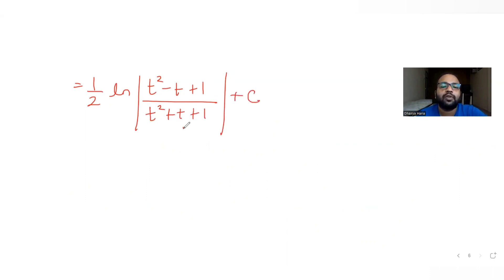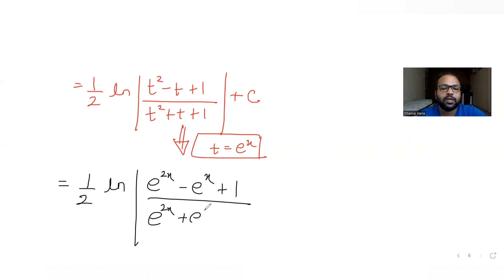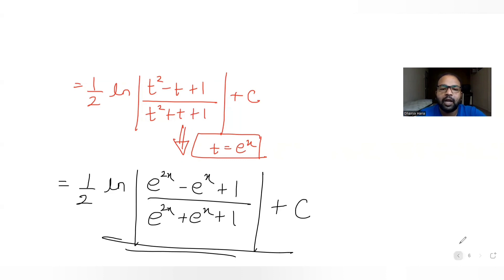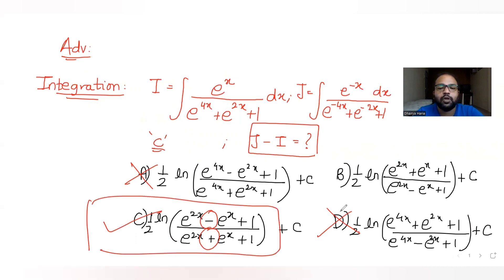Now resubstituting t as e raised to x, we get half log to the base e of (e raised to 2x minus e raised to x plus 1) upon (e raised to 2x plus e raised to x plus 1) plus C. Looking at the options, we have e raised to 2x and e raised to x, with minus in the numerator and plus in the denominator. This matches option C, so C is the correct answer.